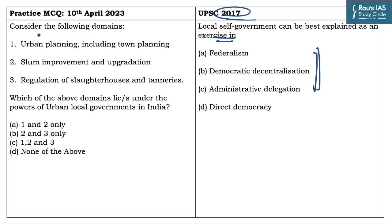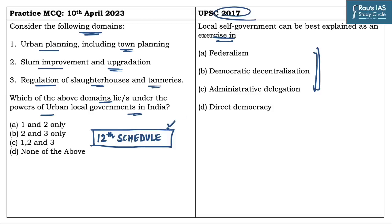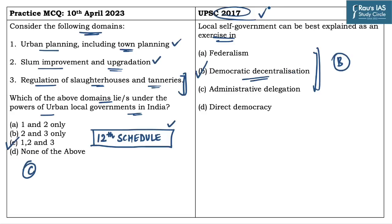The practice MCQ asks which of the listed domains lies under the powers of urban local governments in India: (1) urban planning including town planning, (2) slum improvement and upgradation, (3) regulation of slaughterhouses and tanneries. All three are included in the 12th Schedule of the Indian Constitution, which deals with subjects under the domain of urban local governments. All statements are correct, so the answer is C (1, 2 and 3). The answer to the previous question is B — local self-government is an exercise of democratic decentralization.